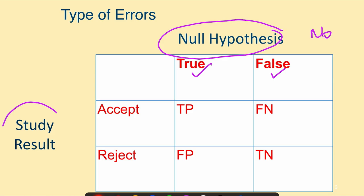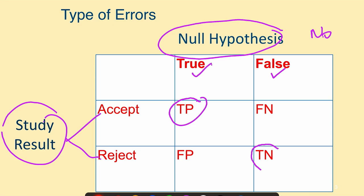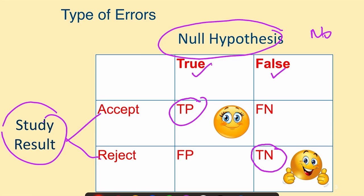Our study result can either accept or reject the null hypothesis, giving four possibilities. We can accept when the null hypothesis is true — that is a true positive result. We can reject it when it is actually false — that is a true negative. For both these situations, they are not errors. True positives and true negatives mean we are happy with the study results.